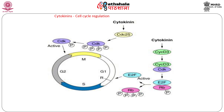During G2/M transition, cytokinins promote the activity of a cyclin phosphatase Cdc25, which dephosphorylates the A and B-type cyclin-dependent kinase and promotes its association with B-type cyclins. The Cdk-cyclin B complex regulates the transition of the cell cycle to the mitotic or M phase.